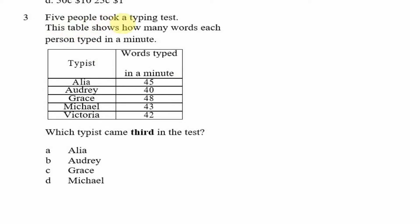Question 3: Five people took a typing test. The table shows how many words each person typed in a minute. Which typist came third in the test? That would be the person who typed the third highest number of words. The highest value is 48, second highest is 45, and the third highest is 43, which is Michael. So the answer is option D, Michael.